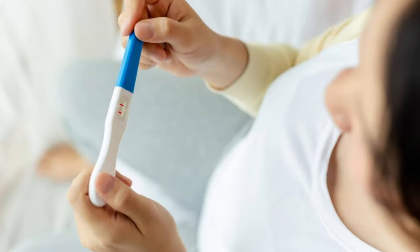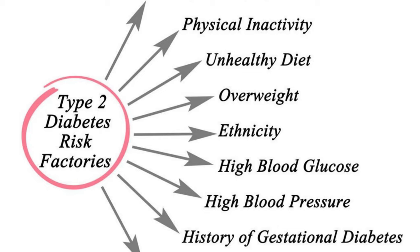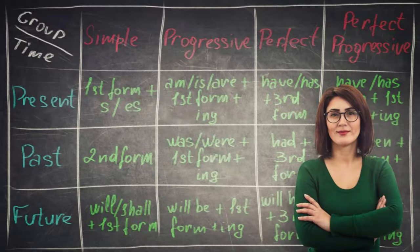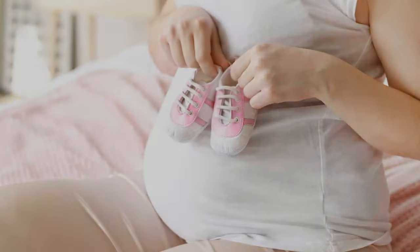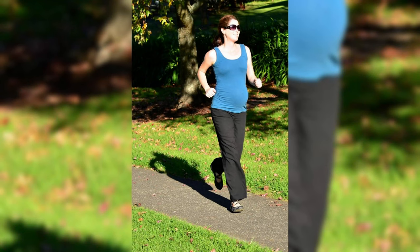Gestational diabetes has an adverse effect on the development of the child. Due to this type of diabetes, the child's heart does not develop properly, and weight increases, which creates problems in normal delivery. Women having this type of diabetes should control their eating habits — they should not eat high calories, excess carbohydrates, sweets, or excess fruits. One should also exercise continuously; walking is considered good for women during pregnancy.